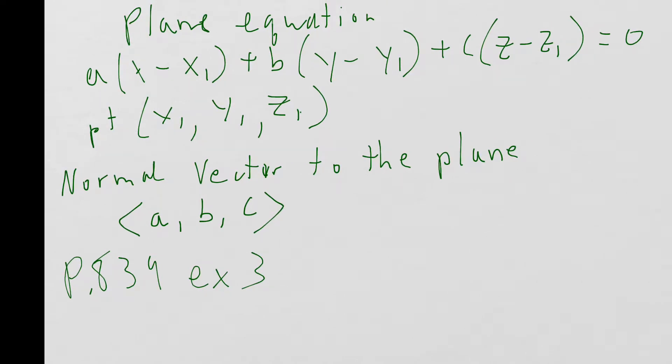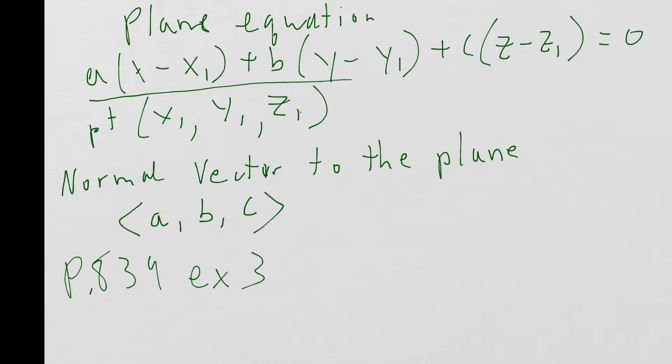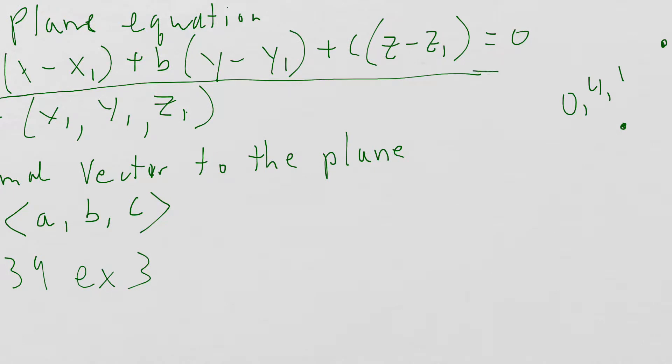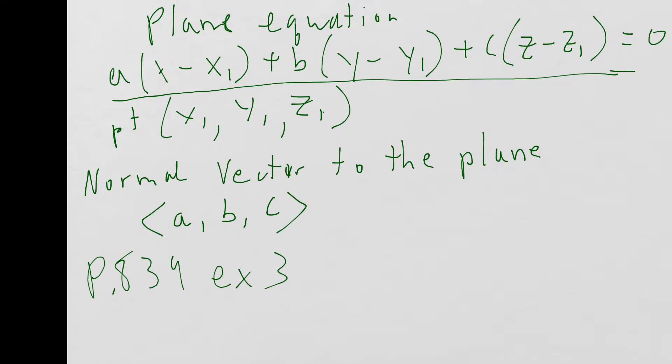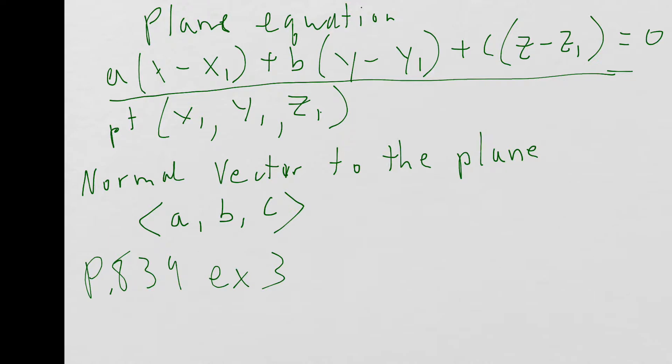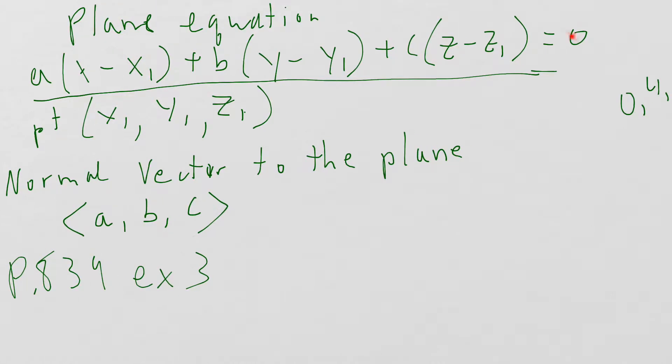Okay, this is the standard form of a plane. This is in your book. I believe it's on page 833. A times x minus x1, B times y minus y1, C times z minus z1, and planes always equal, planes equal 0.